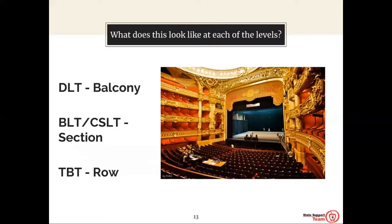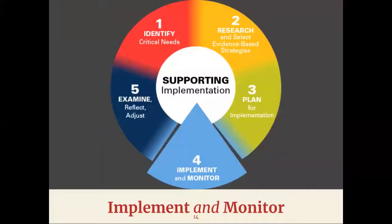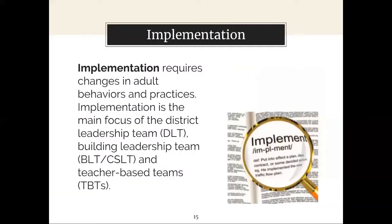Each team has their specific role for each step in the Ohio Improvement Process. Please refer to our previous webinar for a more in-depth look at the roles of each team in steps one, two, and three. Let's move on to step four, which is to implement and monitor. In the past, one of the greatest challenges with school improvement was in the area of implementation.